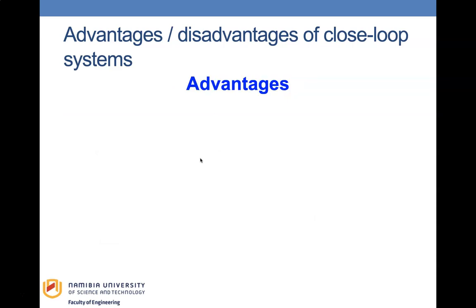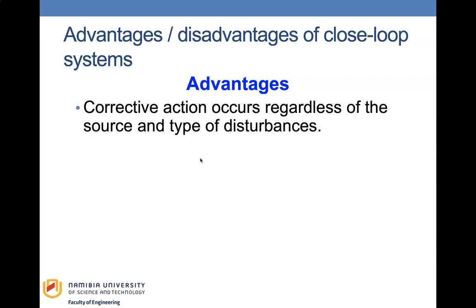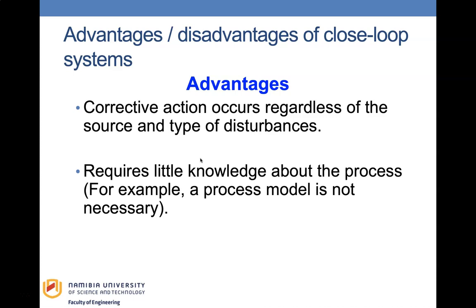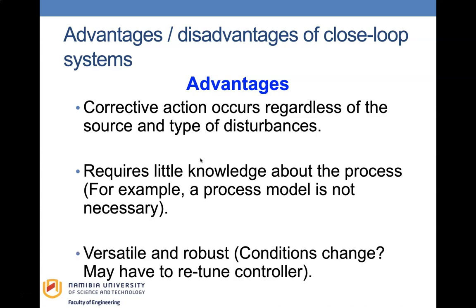The advantages of a closed loop system include a corrective action that occurs regardless of the source and type of disturbance. It requires little knowledge about the process — for example, a process model is not necessary. It is also versatile and robust, though when conditions change you may need to retune the controller.